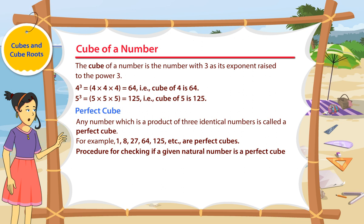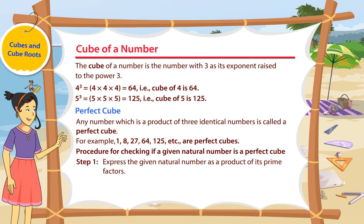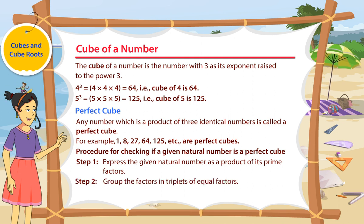Procedure for checking if a given natural number is a perfect cube. Step 1: Express the given natural number as a product of its prime factors. Step 2: Group the factors in triplets of equal factors.